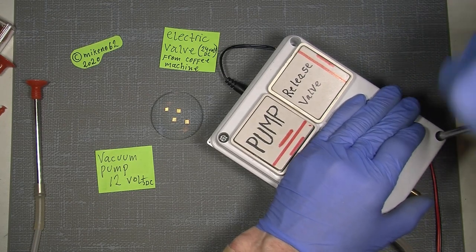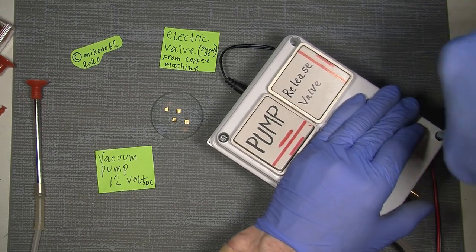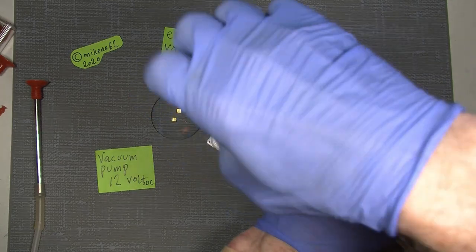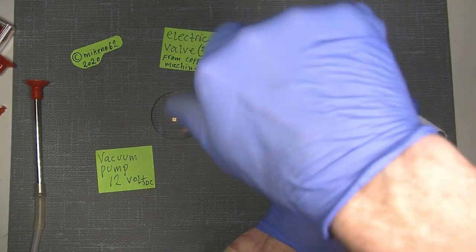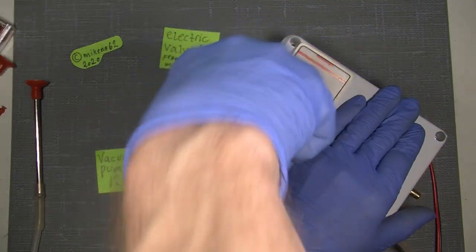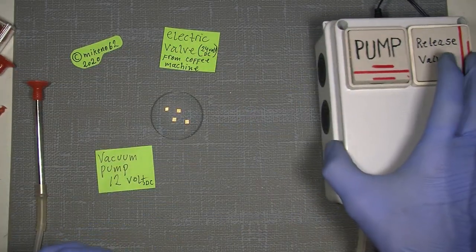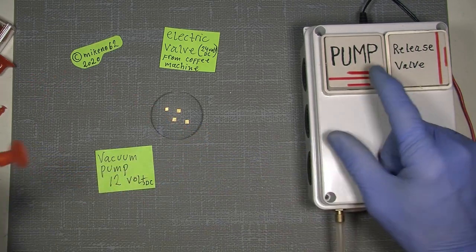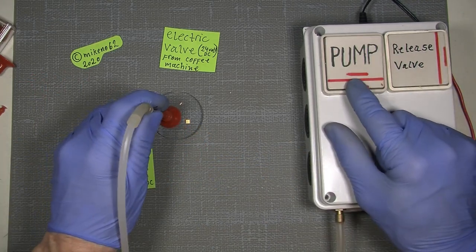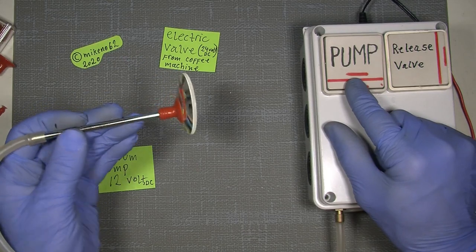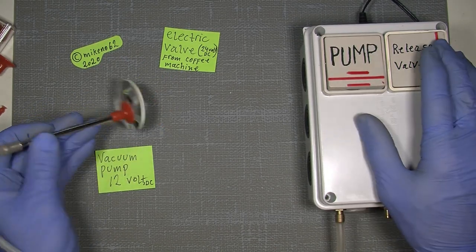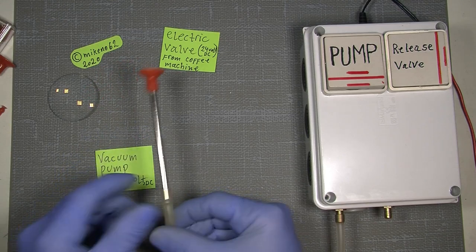If you go to one of those things where they sell things for kitchen, kitchen tools, kitchen machines, you probably can find one of those vacuum sealers. As you can see, it's actually very good.